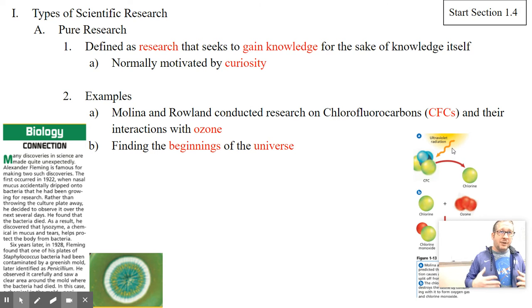So what we're going to end up now is looking at types of research. And through this whole scientific process learning that we've done over the last week or so, really what that leads to is research. So there are different types of research. There is pure research, which is defined as research that seeks to gain knowledge for the sake of knowledge itself. This is motivated by curiosity.